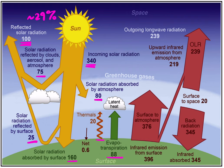We'll talk a little bit more about this, but the vast majority of energy emitted from the surface is long-wave infrared energy, emitted again in accordance with the Stefan-Boltzmann law. Of that 396 watts per meter squared, 20 of it goes to space, but 376 watts per meter squared are actually absorbed in the atmosphere.